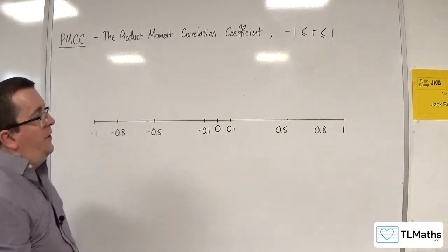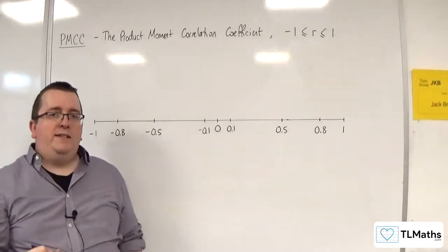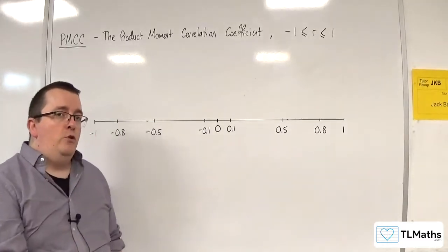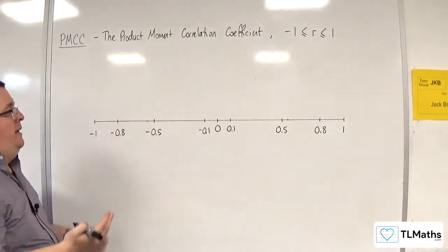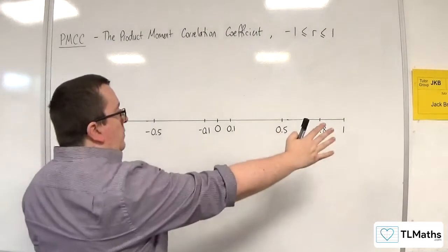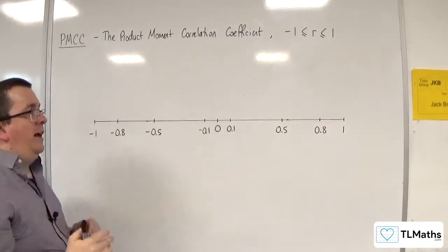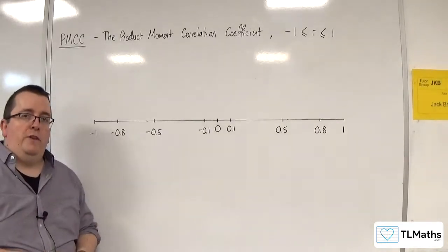It is on this sliding scale, and it identifies whether you have negative correlation or no correlation or positive correlation. And the closer it is to the ends of this scale, then the stronger the correlation.